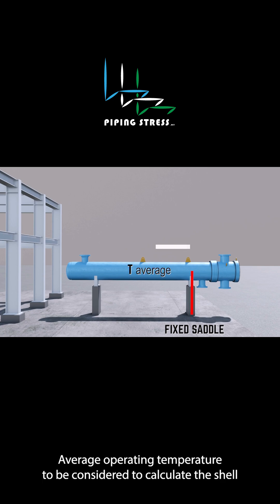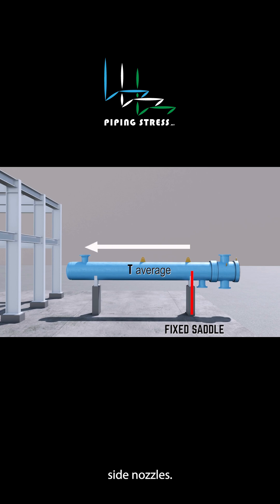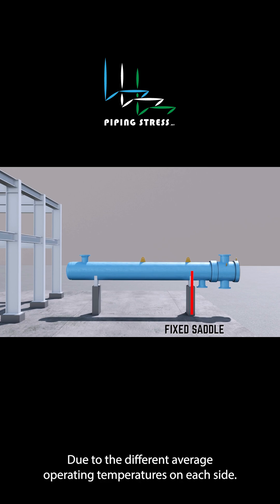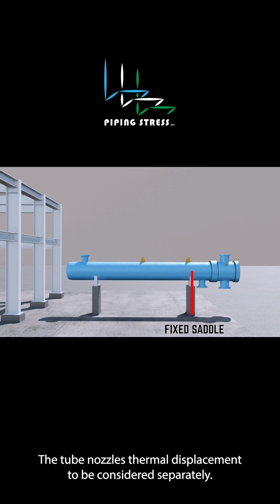The shell side average operating temperature is to be considered to calculate the shell side nozzle's displacement. Due to the different average operating temperatures on each side, the tube nozzle's thermal displacement is to be considered separately.